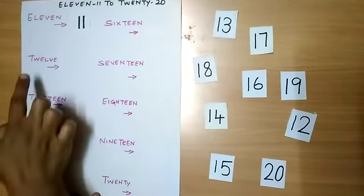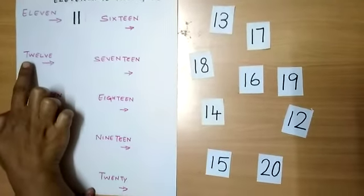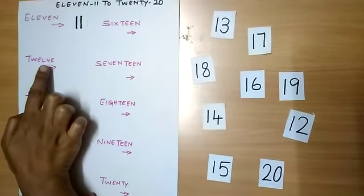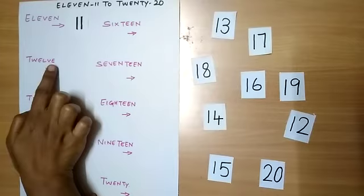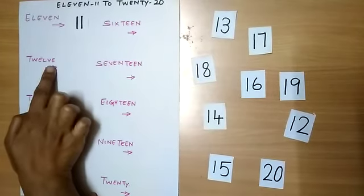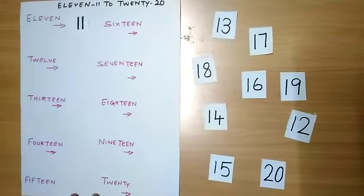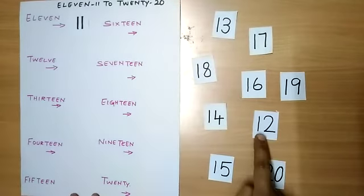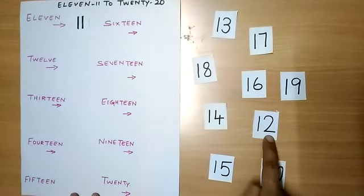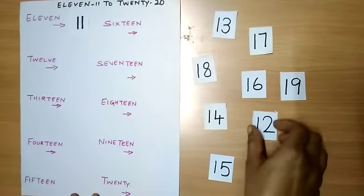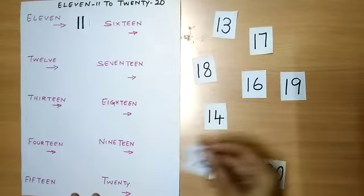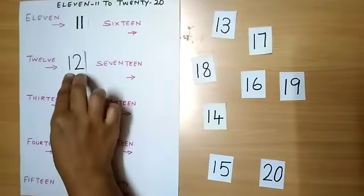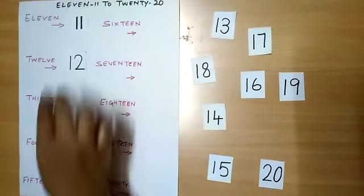Next we will spell it: T-W-E-L-V-E. That is 12. So where is number 12? This is number 12. 1 and 2 makes number 12. So now I arrange number 12 to number name 12.